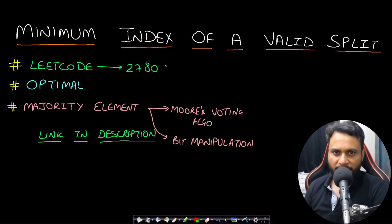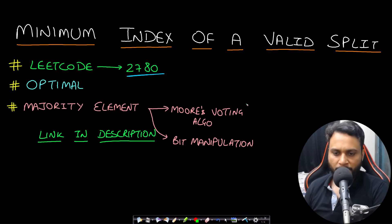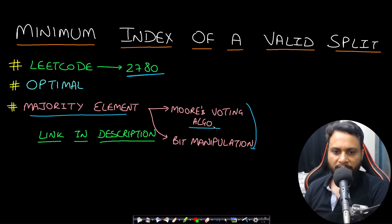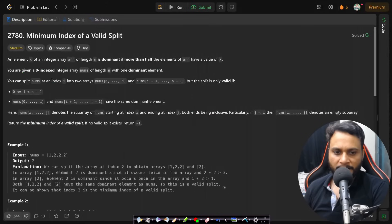Hello guys, welcome back to Tech Doors. In this video we will look at the 'Minimum Index of a Valid Split' problem, which is LeetCode number 2780. A prerequisite before watching this is to learn about finding majority elements. I have already made a couple of videos on this — one using Moore's Voting Algorithm and another using bit manipulation. Both links will be in the description below.